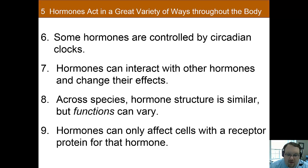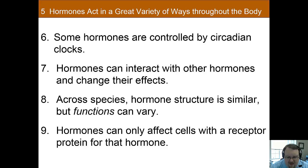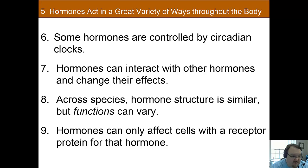A couple more principles. The one to highlight is that, much like neurotransmitters, the only way an organ or cell is affected by a hormone is if it has a receptor for that hormone. This is how hormones can have fairly specific targets despite being circulated throughout the entire body — other organs simply don't have receptors for that hormone. We'll also talk more about melatonin when we get to sleep: it's a hormone controlled by circadian rhythms that affects both sleep and weight.